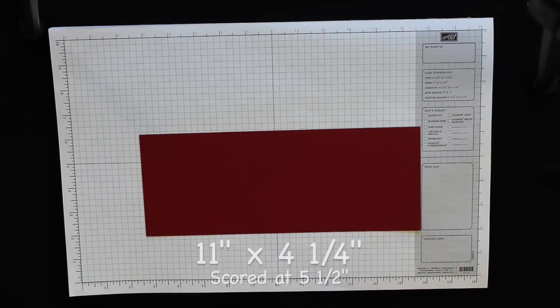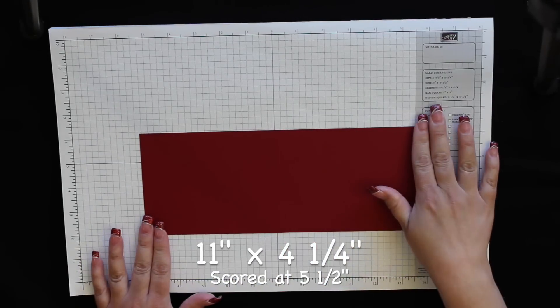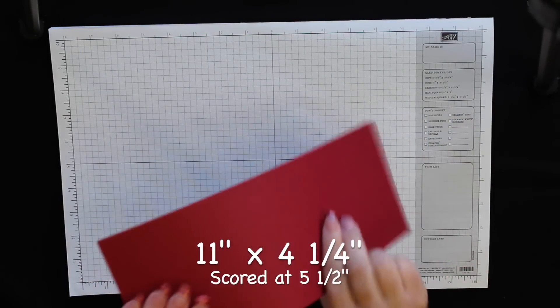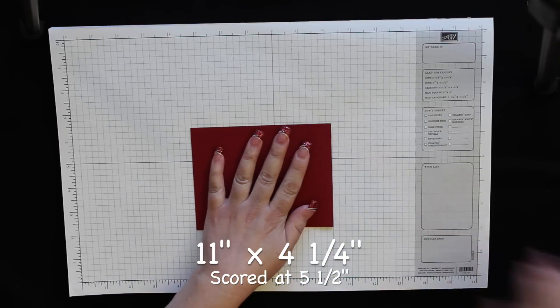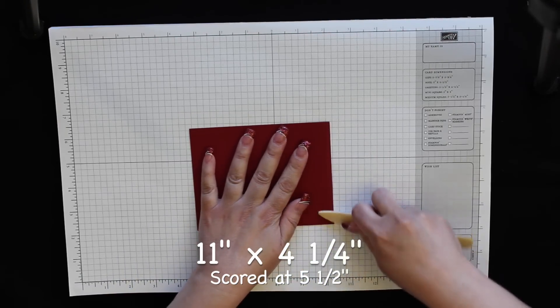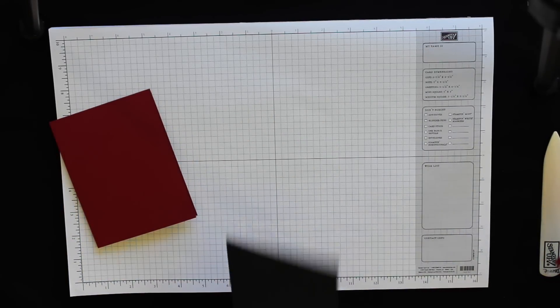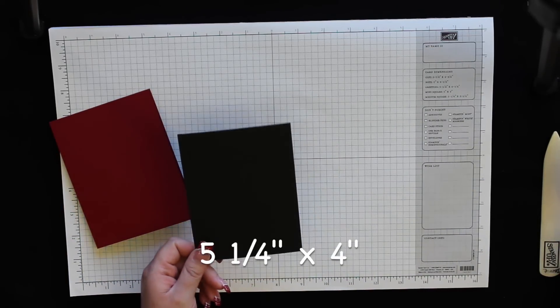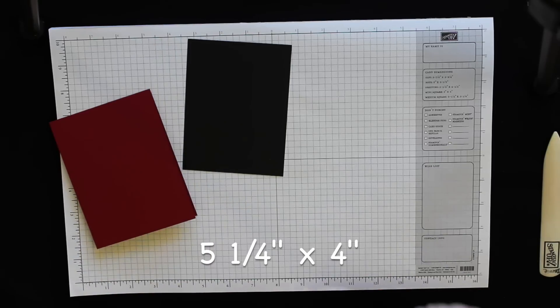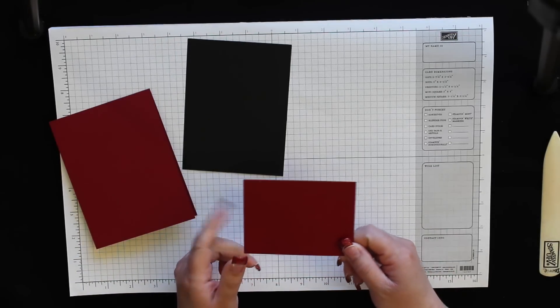To start with, I have a piece of cardstock in Cherry Cobbler that's 11 inches by 4 1/4, and I have that scored at 5 1/2 inches, and that's going to be the card base. Next I have a piece of basic black cardstock. This measures 4 inches by 5 1/4. You'll also need another piece of Cherry Cobbler paper that measures 4 inches by 3 inches.